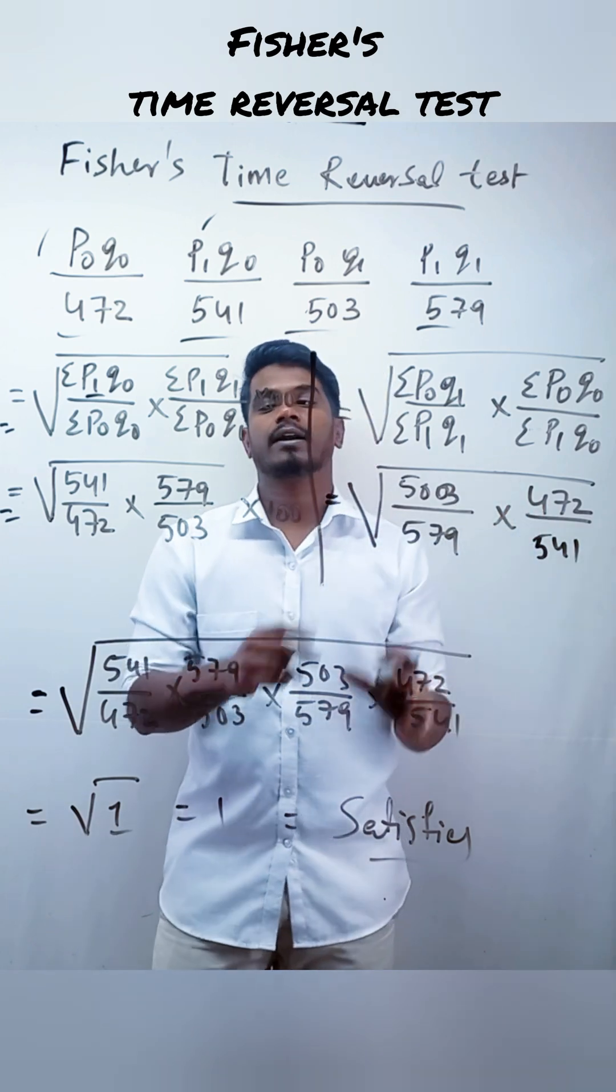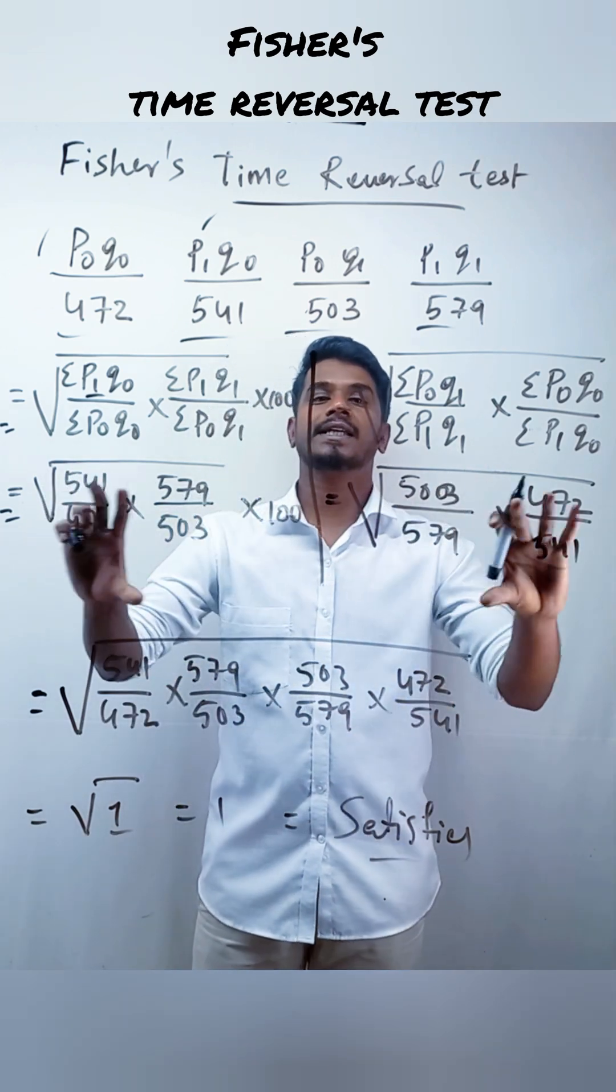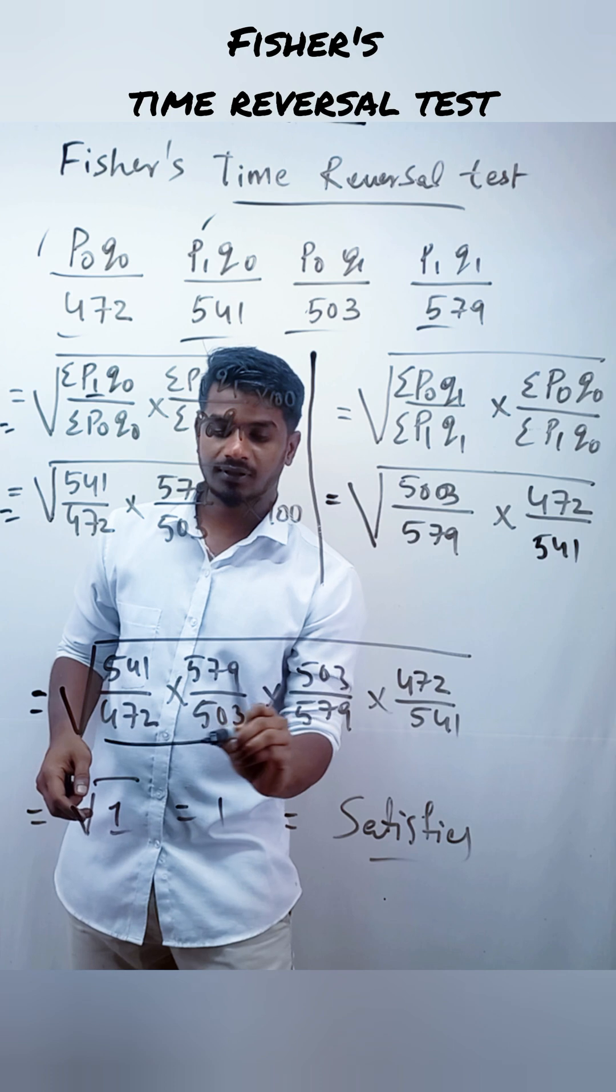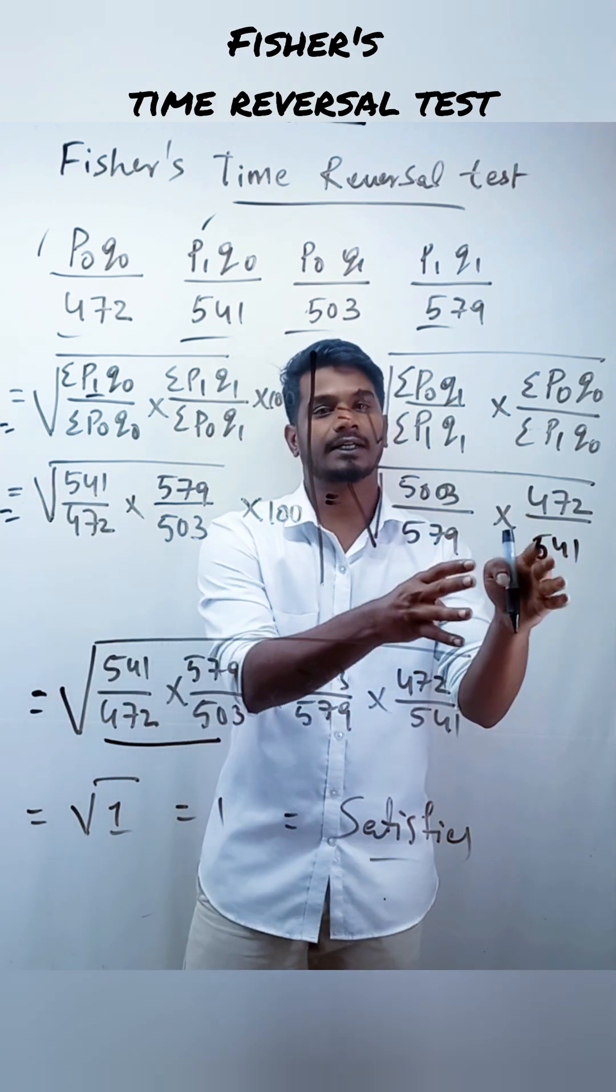Next, put the values here and we should merge these two. So, first, write the Fisher's and next, write the TRT.